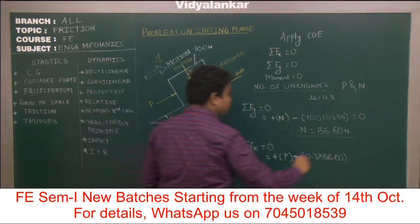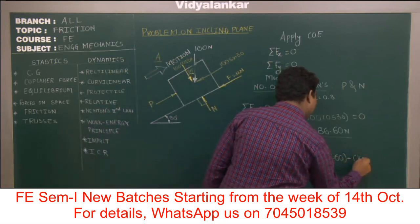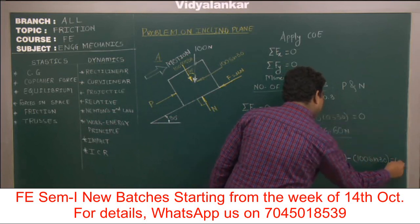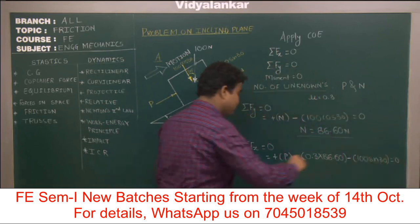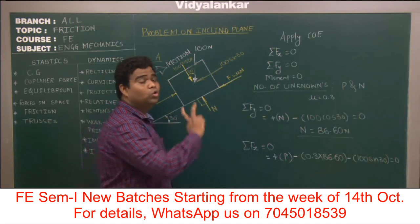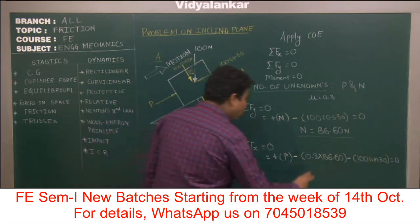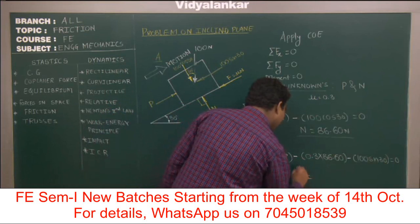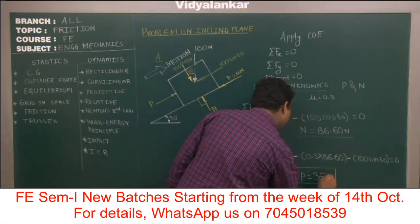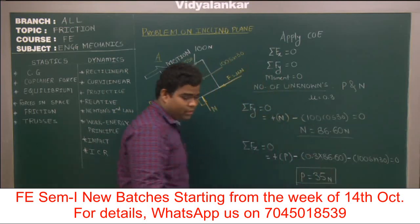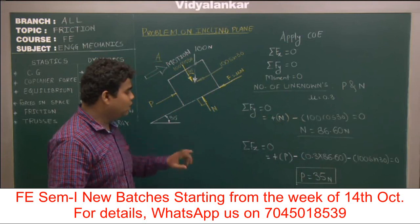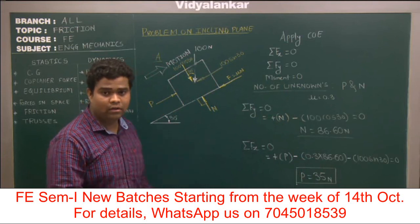The third force is minus 100 sin 30. So all three forces are present: one going upwards and two coming downwards. On calculation we get the value of P as 35 Newton. That means to move this block up, a force of 35 Newton is required when the coefficient of friction is 0.3.